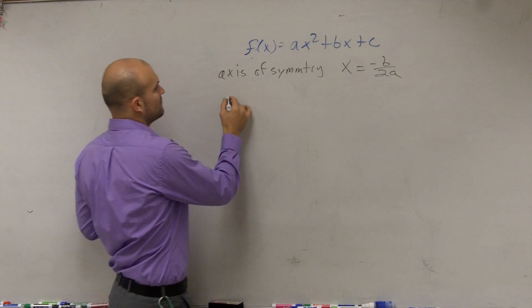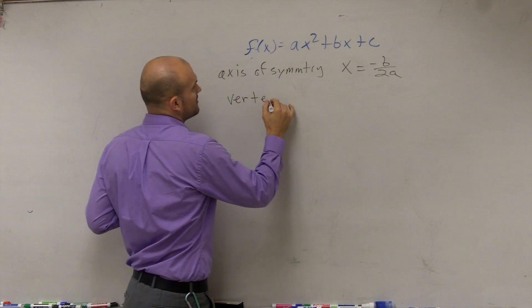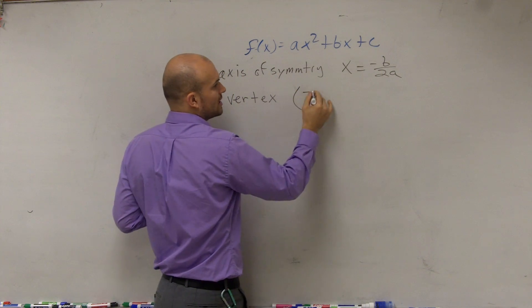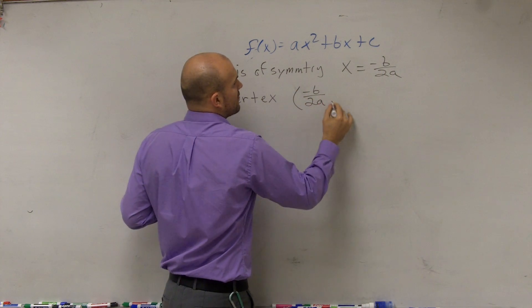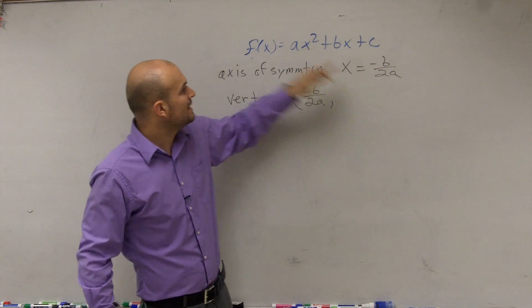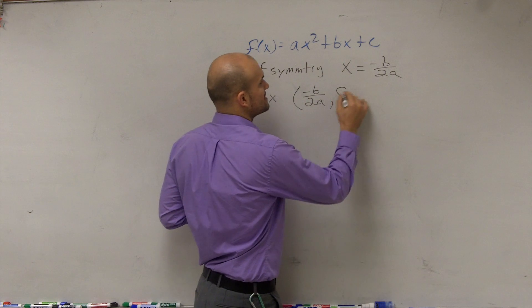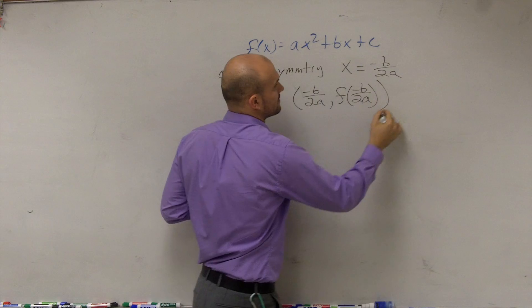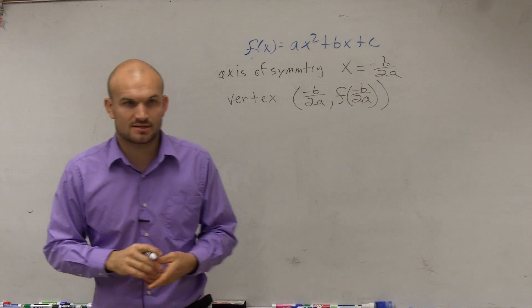Then we also said we could find the vertex. Now, how did we find the vertex? Well, remember, this was your x-coordinate of your vertex. Then what you had to do to find the y-coordinate is you'd plug this value into your function. So the way we represent that was using function notation of f of negative b over 2a.